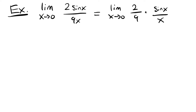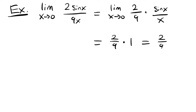We're just able to evaluate by writing 2 ninths times the limit of sine x over x as x approaches 0, which we know to be 1 because that's our special limit. And then that's going to be equal to 2 ninths.